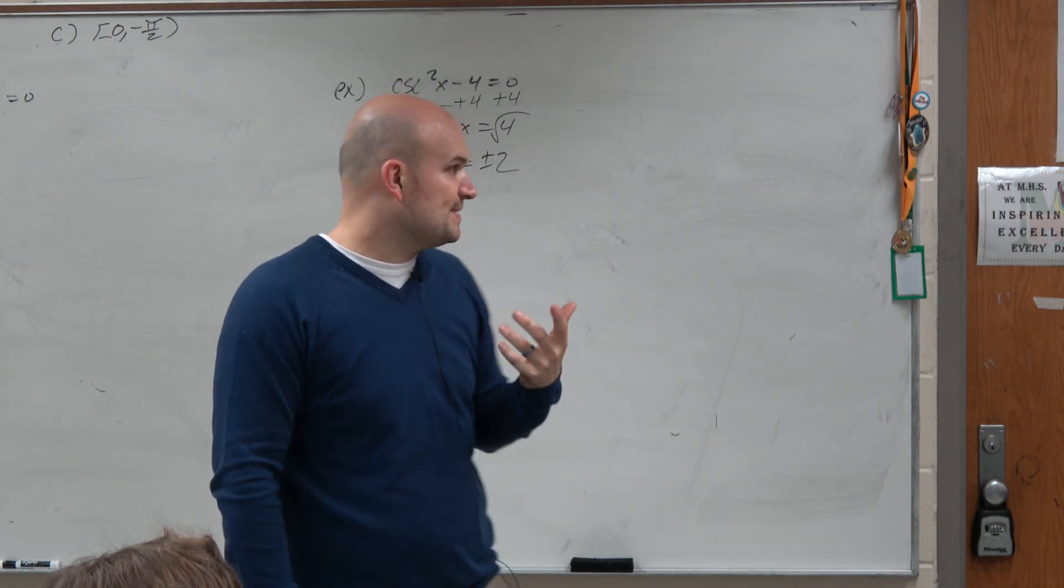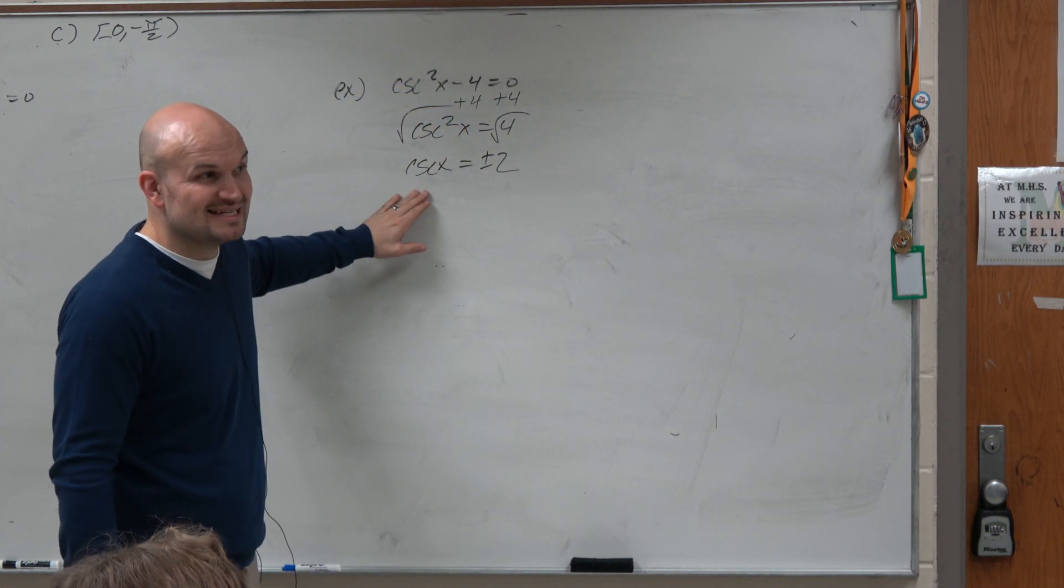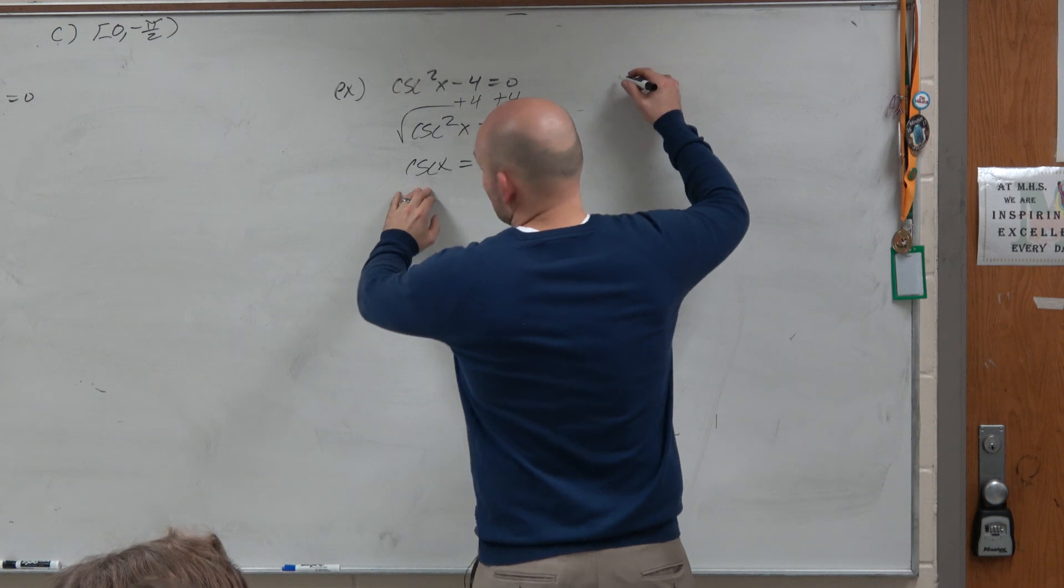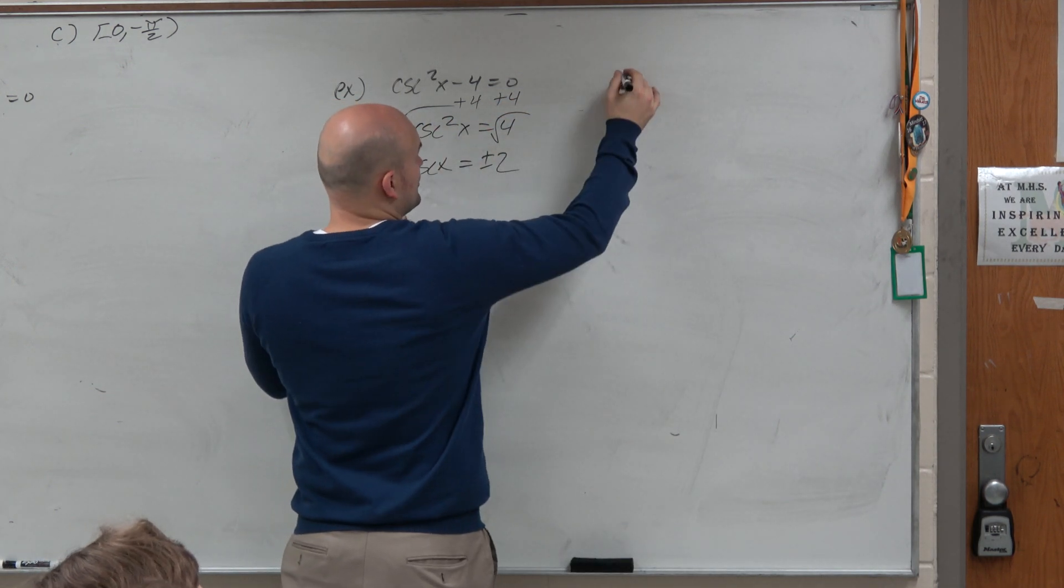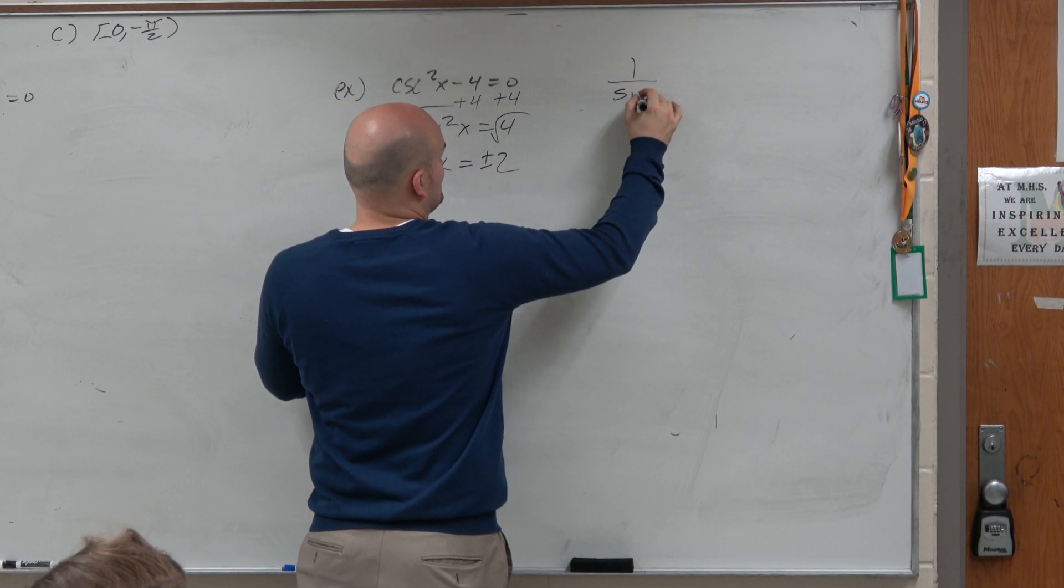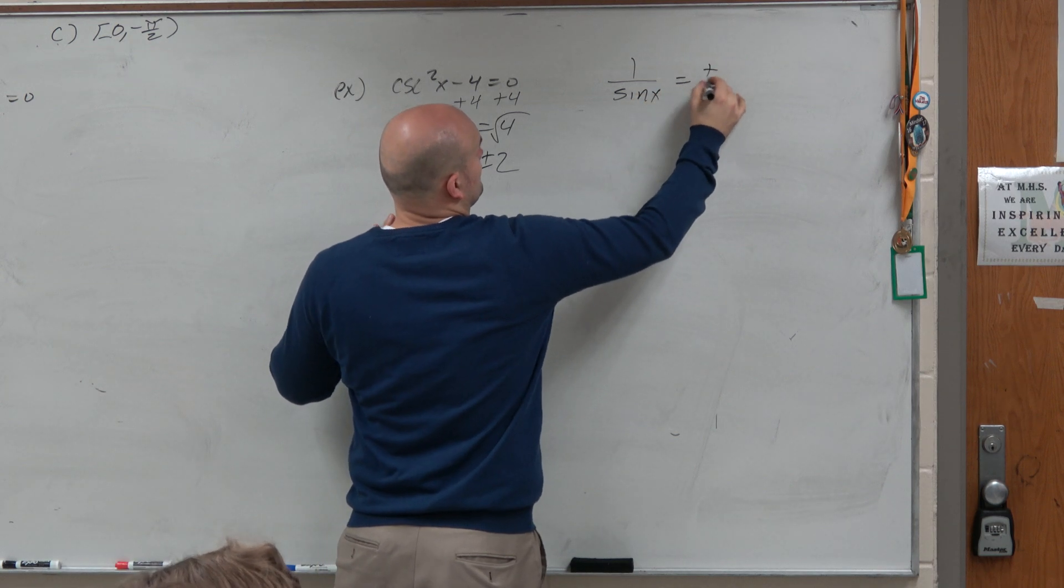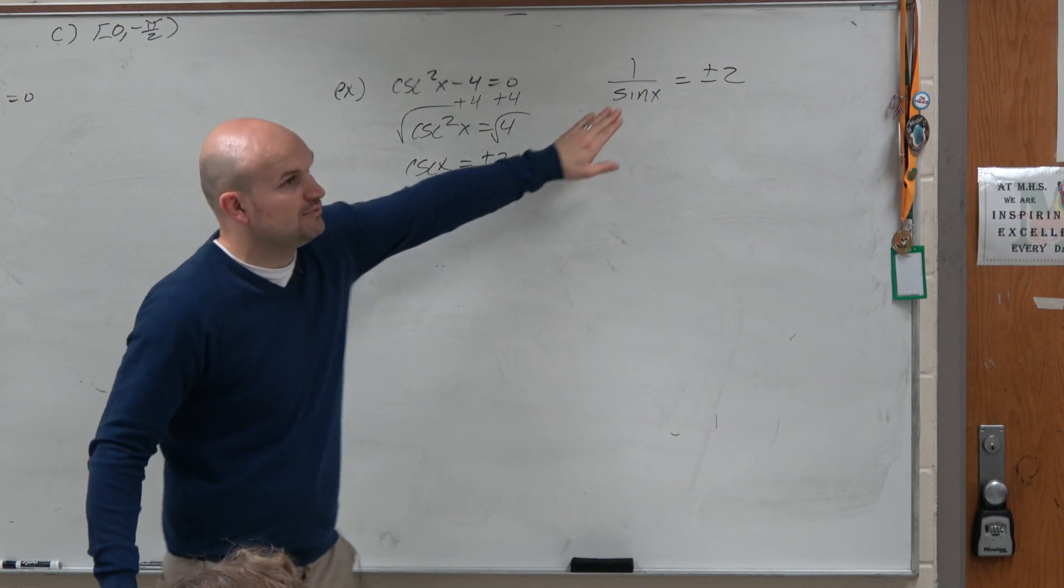So one thing we could also think about, let's look at this as identities. Like, there's a couple ways you guys can do this. Wouldn't you guys agree that cosecant is the reciprocal of sine? Yeah. So I could just replace cosecant with 1 over sine?